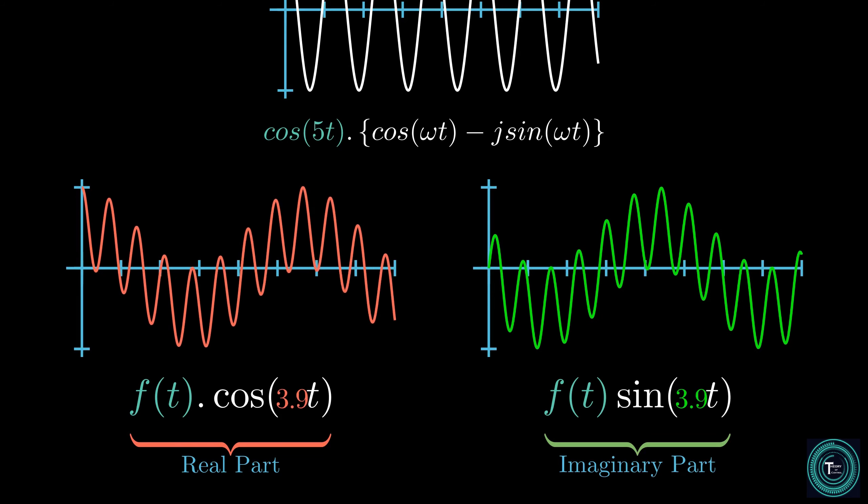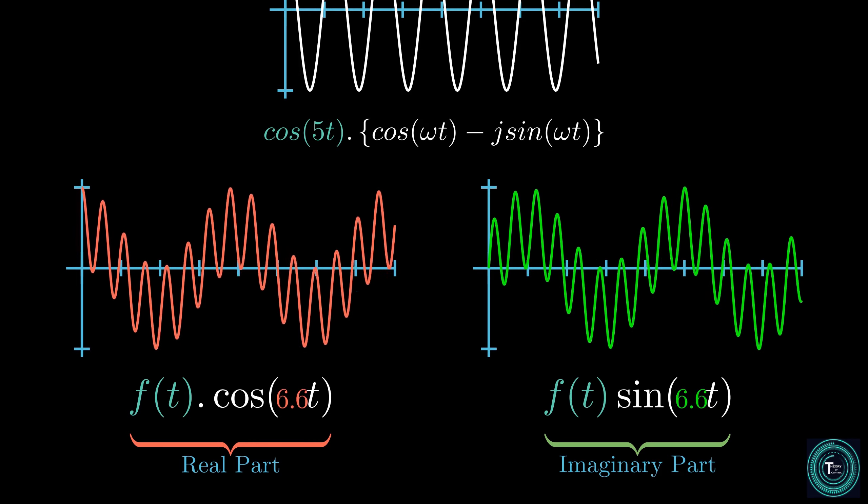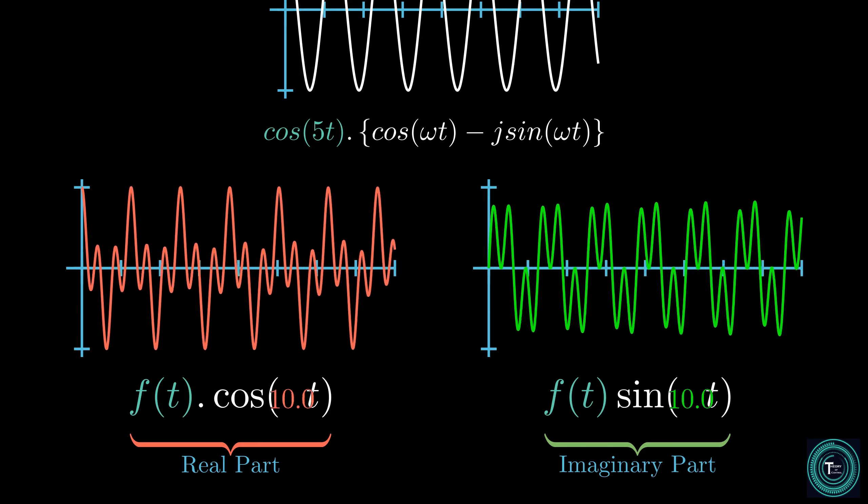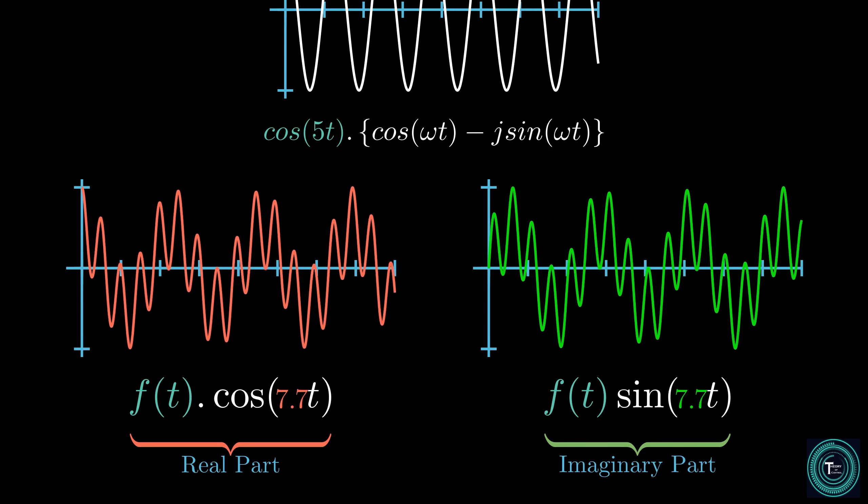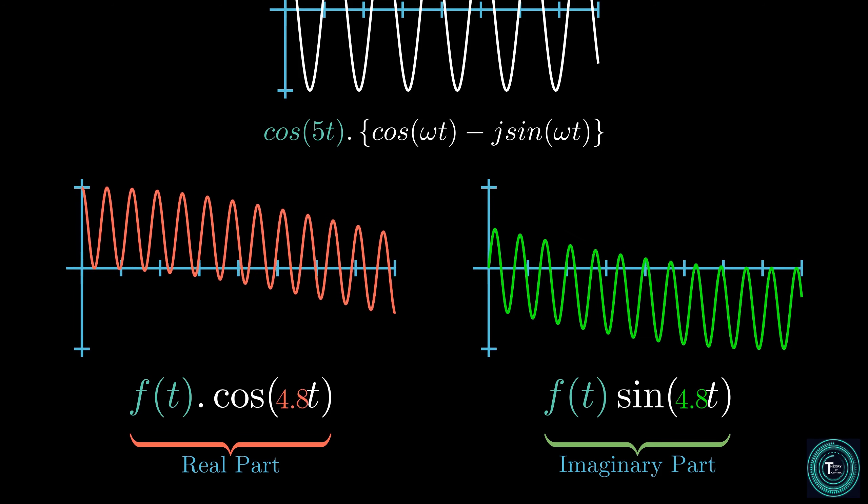Again, very straightforward. As long as the spin frequency omega and the function frequency are different, the graph will always be at a center of zero. The instance we create a match, the whole graph shifts away from the time axis.